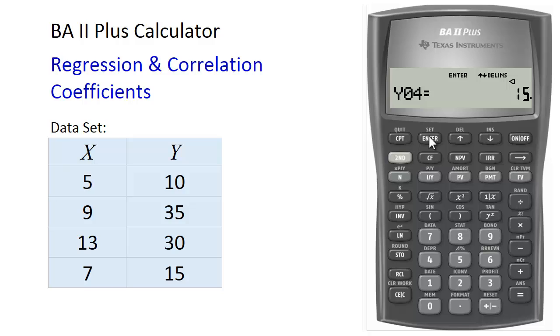Next press 2nd stats to reveal the statistics. By default, the BA II Plus calculator reveals linear regression stats. If your calculator does not display LIN on screen, press 2nd set repeatedly until LIN is displayed. LIN is now displayed. Now press the down arrow button to display the statistics.